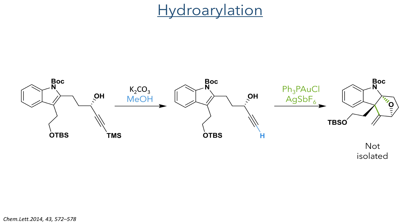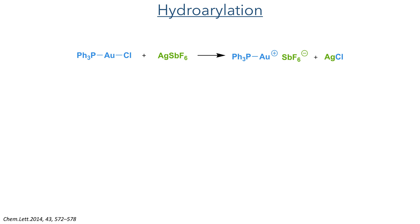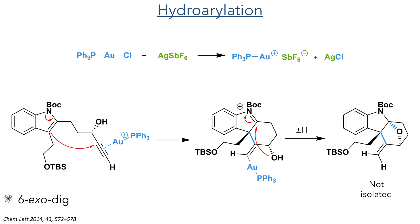The TMS group was then deprotected using potassium carbonate and methanol. The researchers then carried out a gold-promoted hydroarylation reaction. Reaction of triphenylphosphine gold chloride with silver hexafluoroantimonate generates the active cationic gold species. This gold species binds to the alkyne and activates it as an electrophile, where it is attacked by the indole ring in a 6-exo-dig cyclisation to form a new carbon-carbon bond. The cationic iminium intermediate is then attacked intramolecularly by the hydroxyl group to form a bridging ether, together with protodemetalation of the gold adduct to generate an exocyclic alkene.